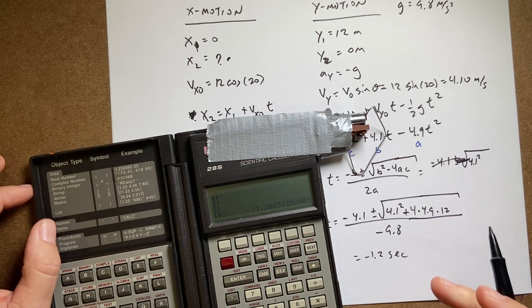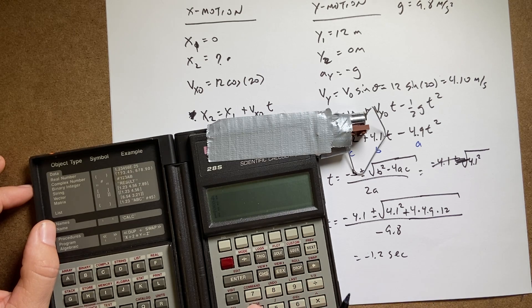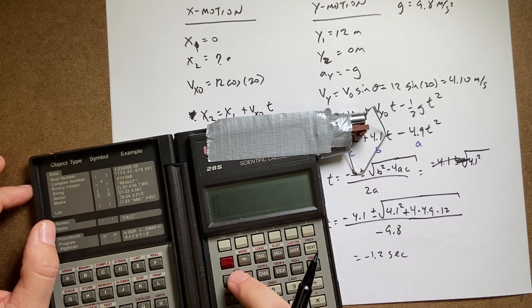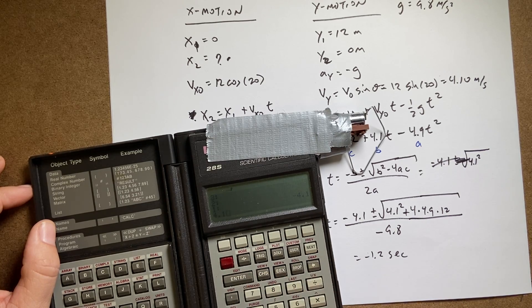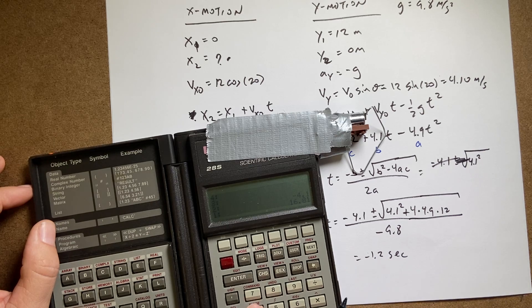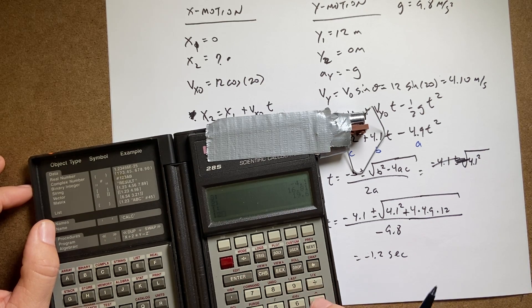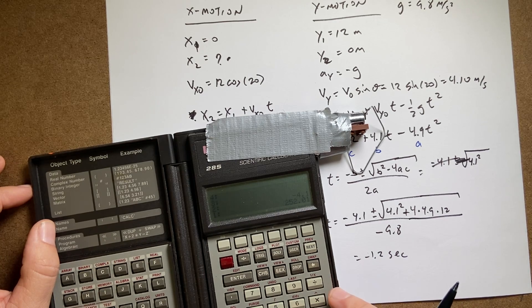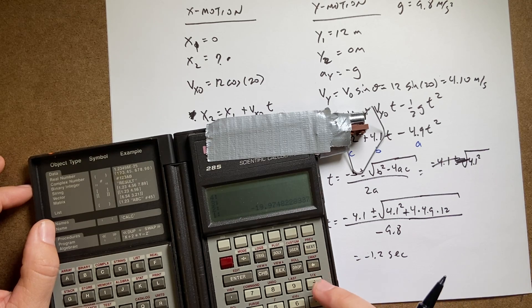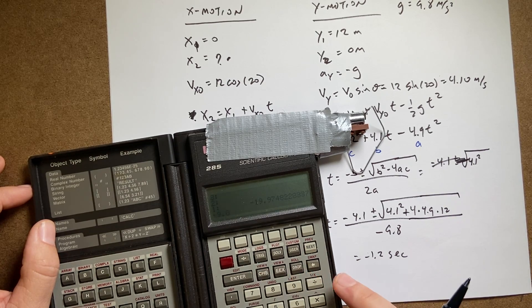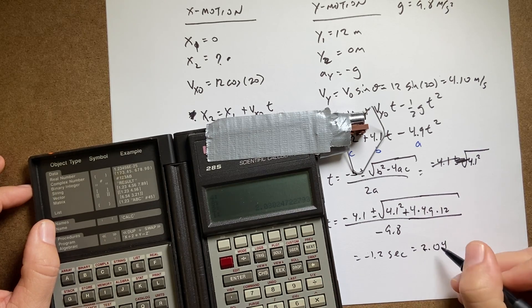And I get negative 1.2 seconds. And of course that's not the answer because I'm not going to get a negative time. So now we're going to go back and do the negative sign. I know this is a long time. 4.1 change sign enter, 4.1 squared, 4 enter, 4.9 times 12 times, plus, square root, minus. And then I have 9.8 negative divided by. And I get 2.04 seconds.